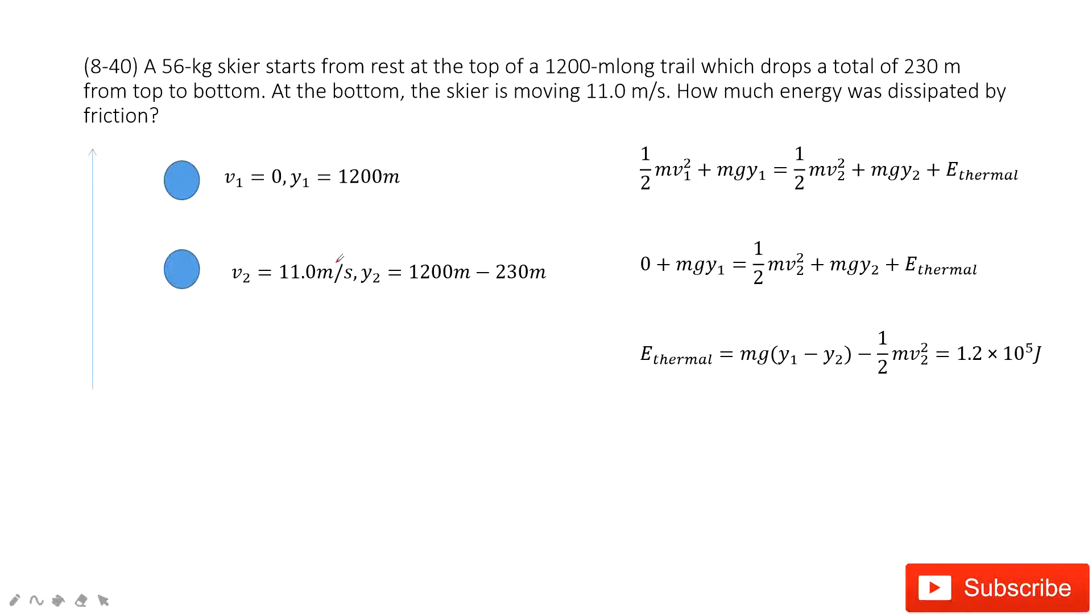This model is very simple. You can see at the initial, the velocity is zero and the position is 1200 meters. Then this ball just moves down. At position 2, velocity is 11 meters per second.